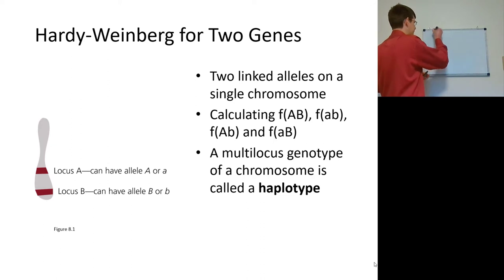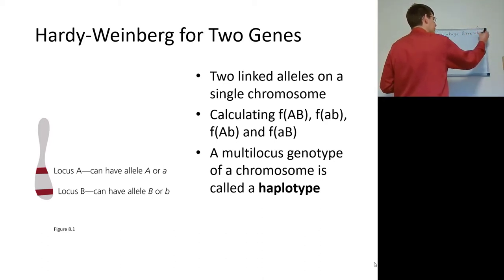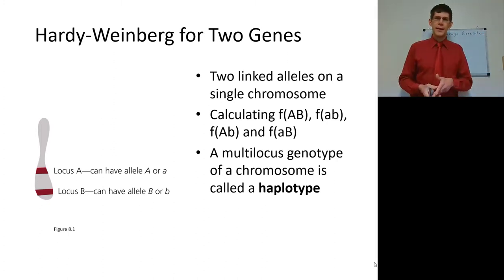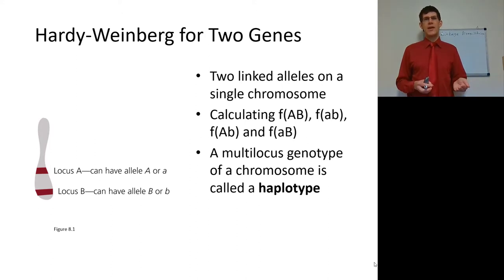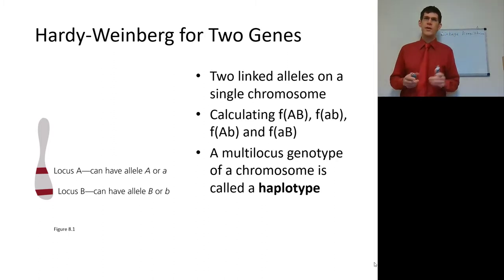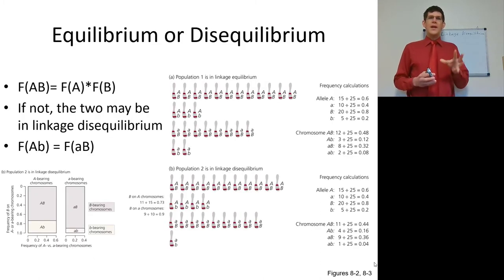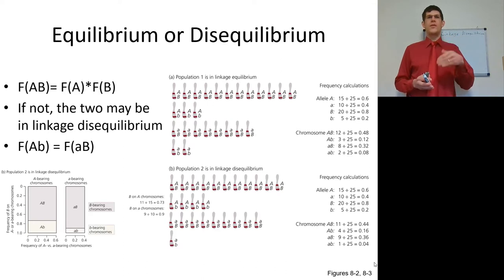Linkage disequilibrium is when you have genes that are linked, and thus certain alleles get inherited together more often than not. When calculating two different alleles, you're looking at four different allele combinations. In a linkage equilibrium scenario, those four combinations are all inherited at roughly the same rate, independently of one another, under the assumptions of independent assortment. We call combinations of two alleles a haplotype, as opposed to the whole genotype, which for a diploid organism is four alleles for two genes. When you can determine haplotype frequencies simply by multiplying the frequencies of the alleles, that's equilibrium.